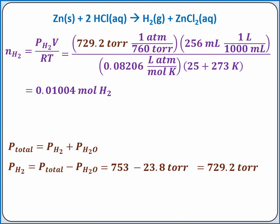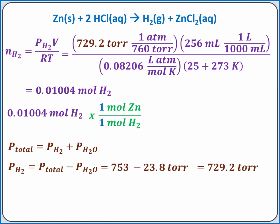Our last step is to convert moles of hydrogen gas produced to grams of zinc metal using dimensional analysis. We can convert from moles of hydrogen to moles of zinc using the coefficients in the balanced chemical equation, and we can convert from moles of zinc to grams of zinc using its molar mass. Completing the calculation, we get 0.657 grams of zinc.